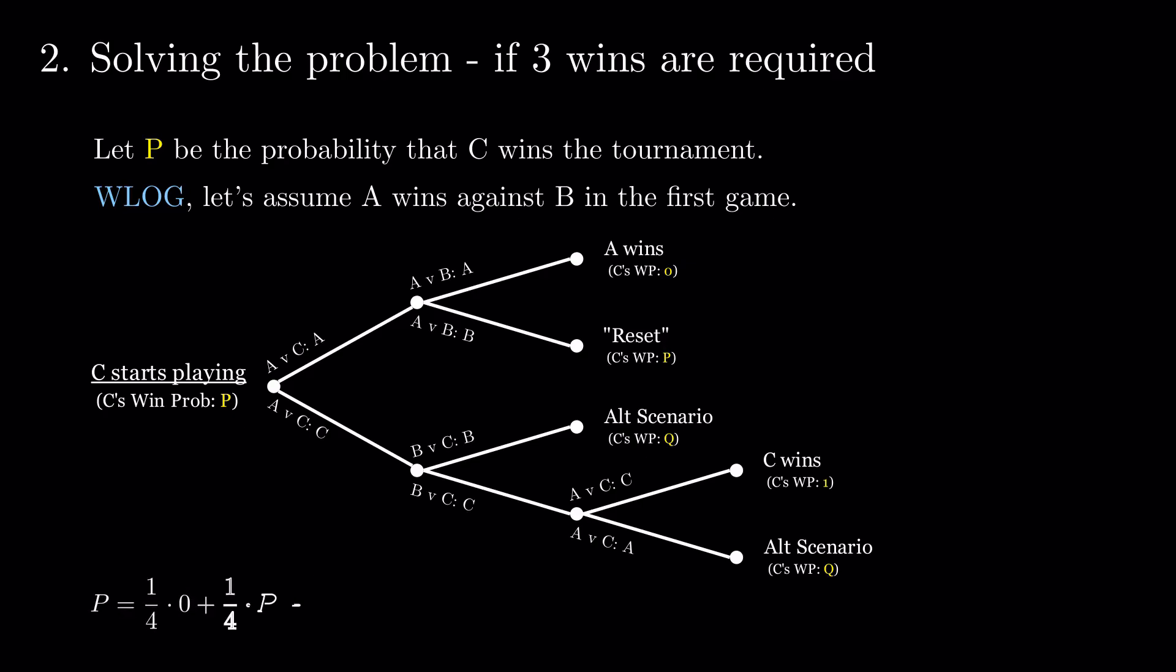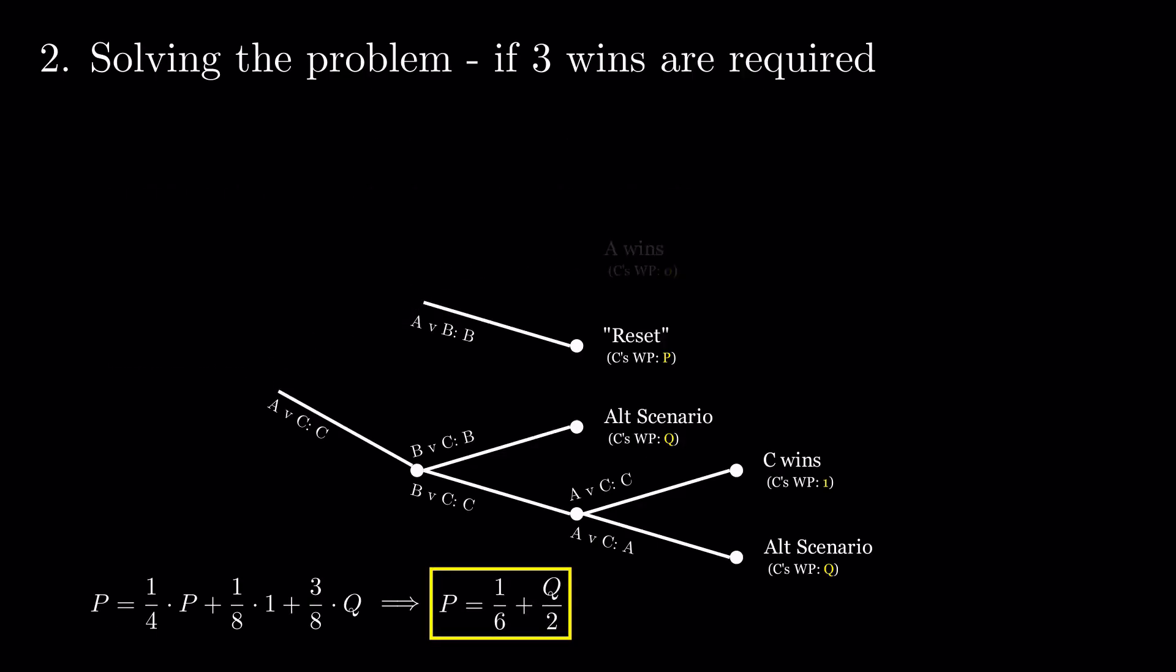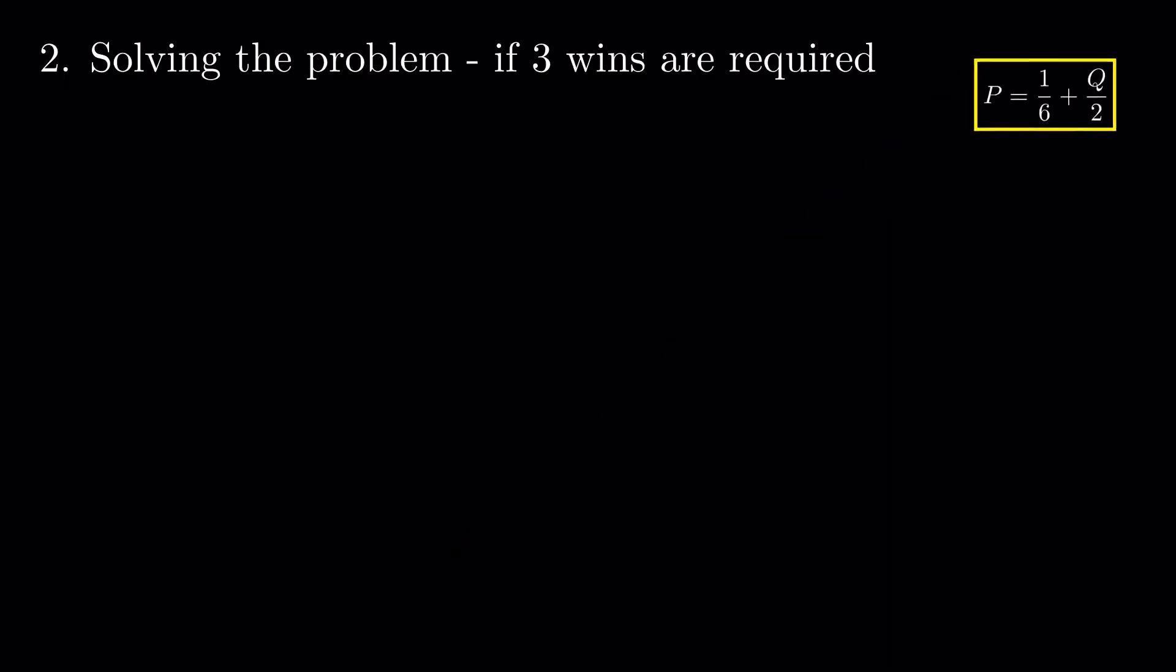Following the probability tree, we obtain an equation between P and Q. Now, we can develop the tree starting from the alternative scenario.